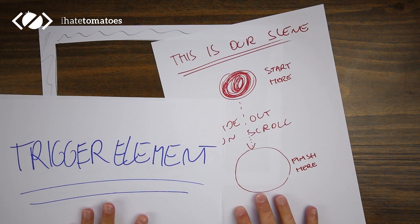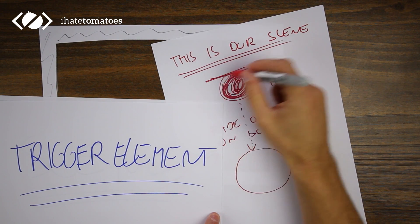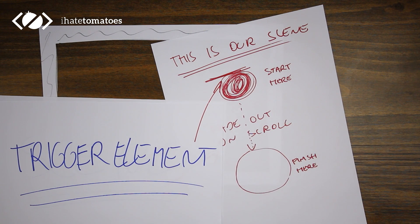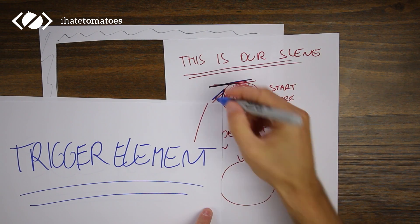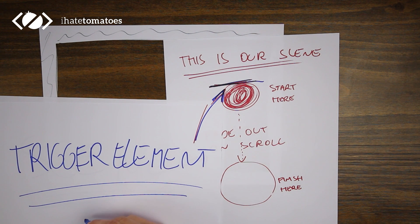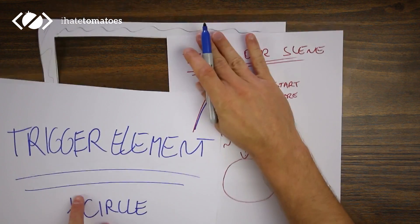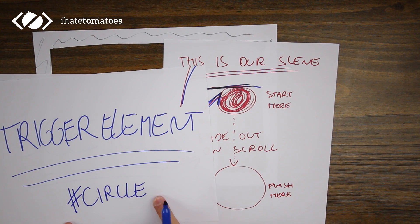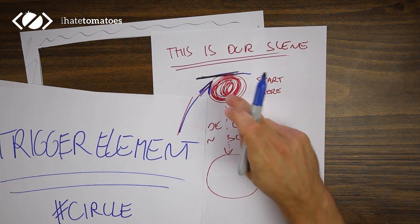For each of the ScrollMagic scenes we also need to define the trigger element. This is any HTML element that will trigger the timeline or tween, and it's always the top of that element that will be used to trigger it. If our circle had an ID of 'circle' on it, we could easily pass in the CSS selector as hash-circle, or use document.getElementById and pass in the trigger this way.